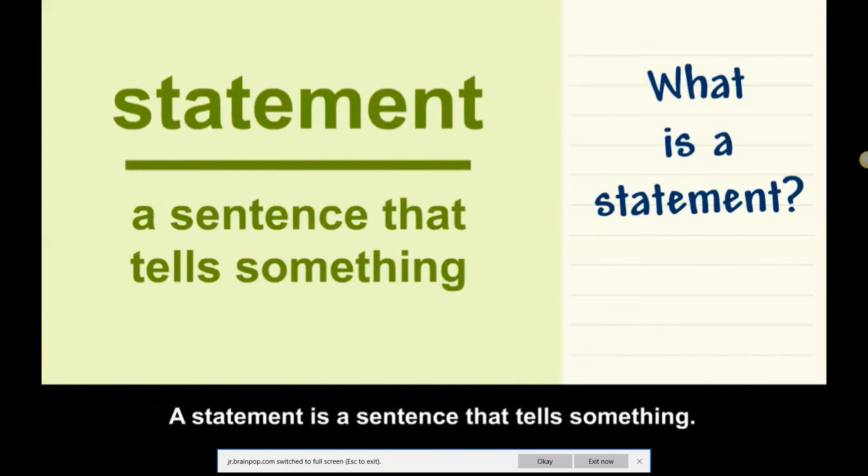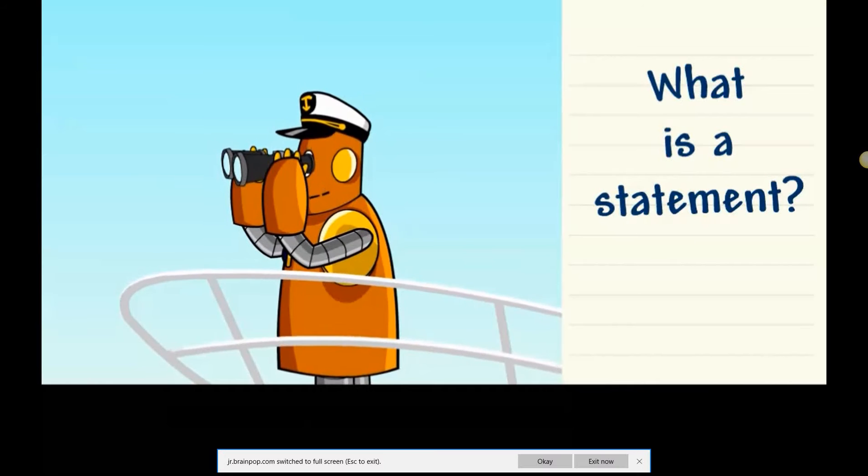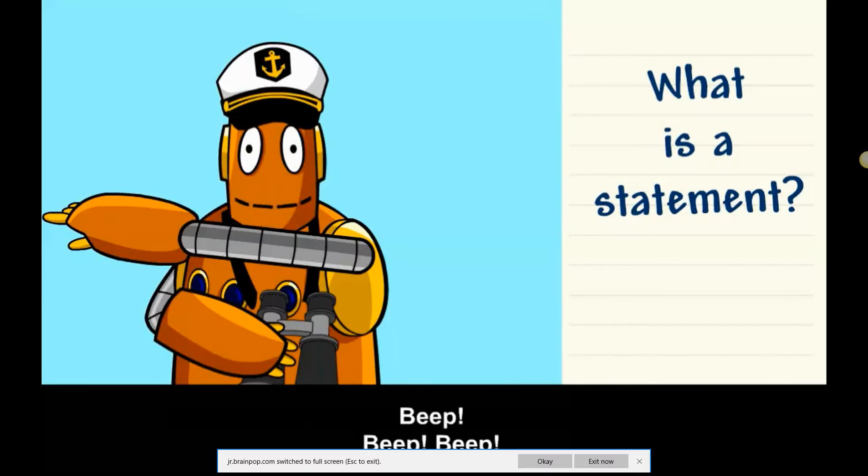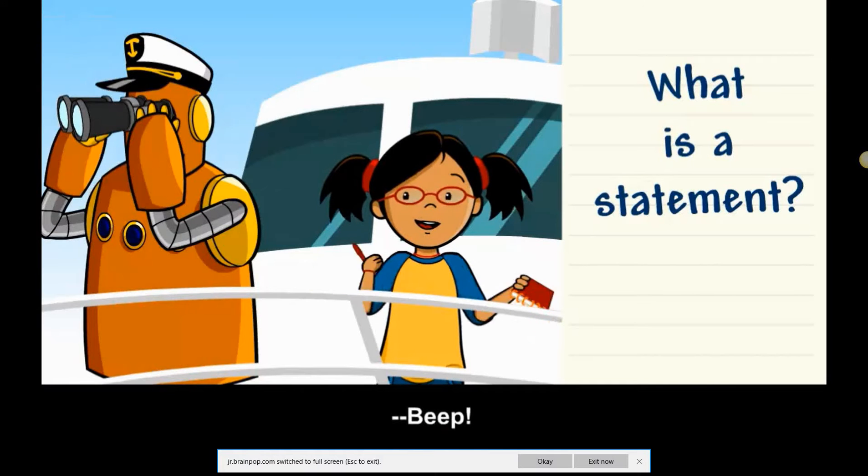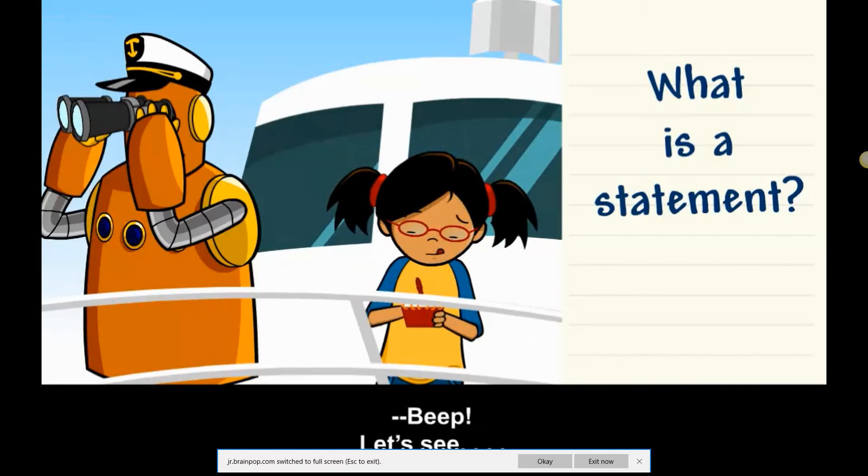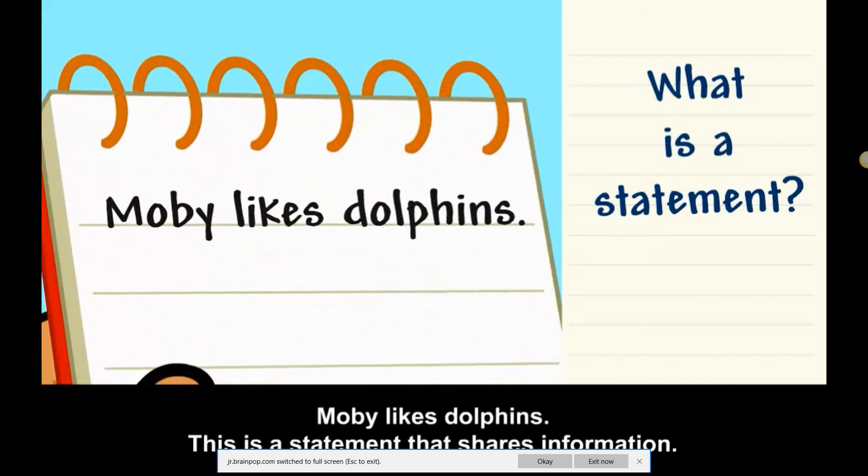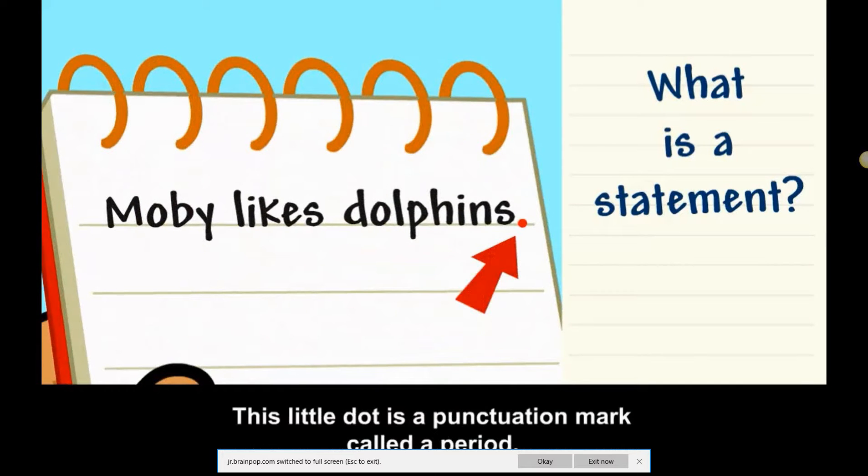What is a statement? A statement is a sentence that tells something. Let's see. Moby likes dolphins. This is a statement that shares information. This little dot is a punctuation mark called a period.